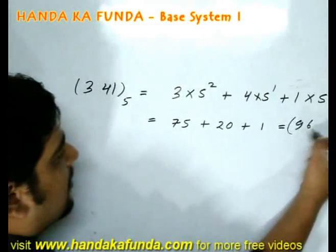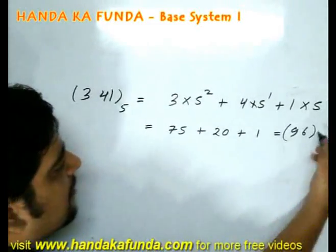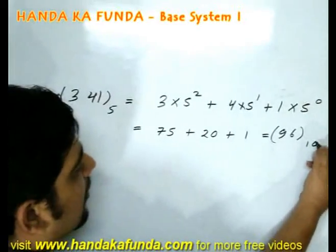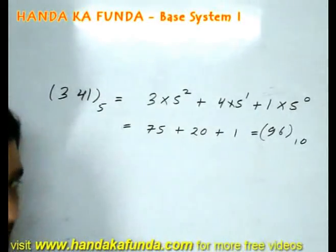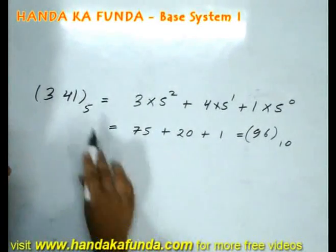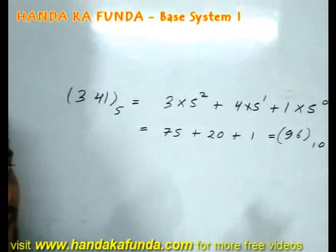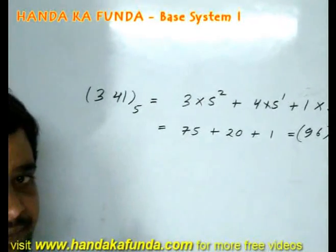This tells us that 341 in base 5 translates to 96 in decimal. As you can see, as the base has gone up, the value has decreased — confirming the pattern observed earlier.